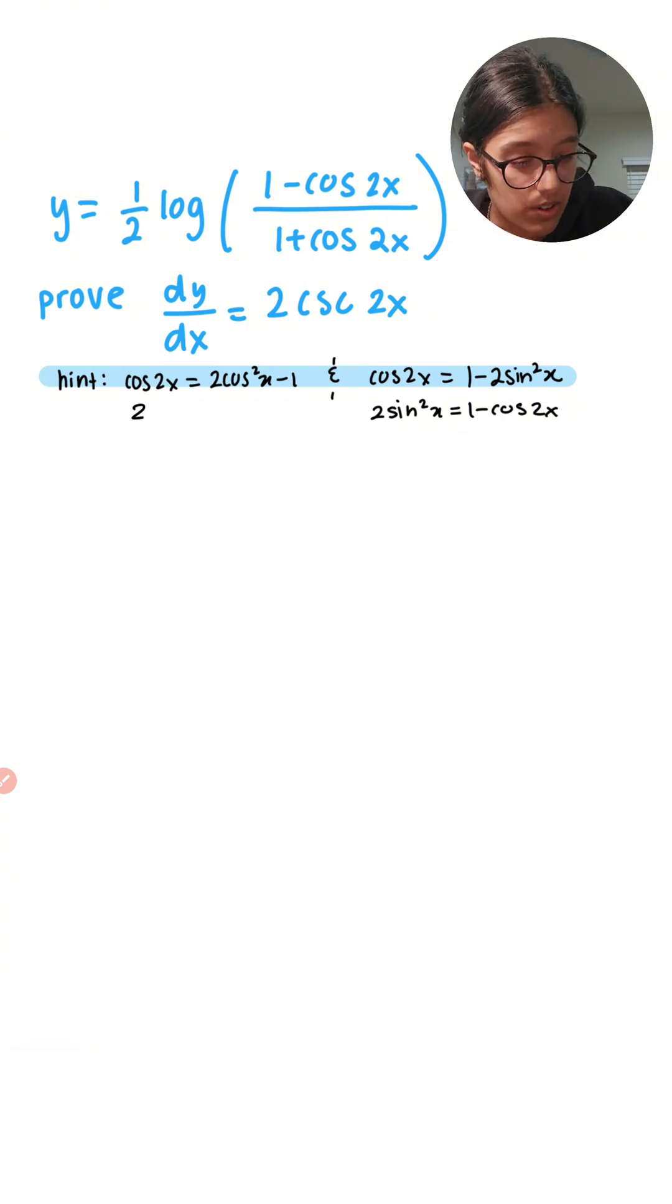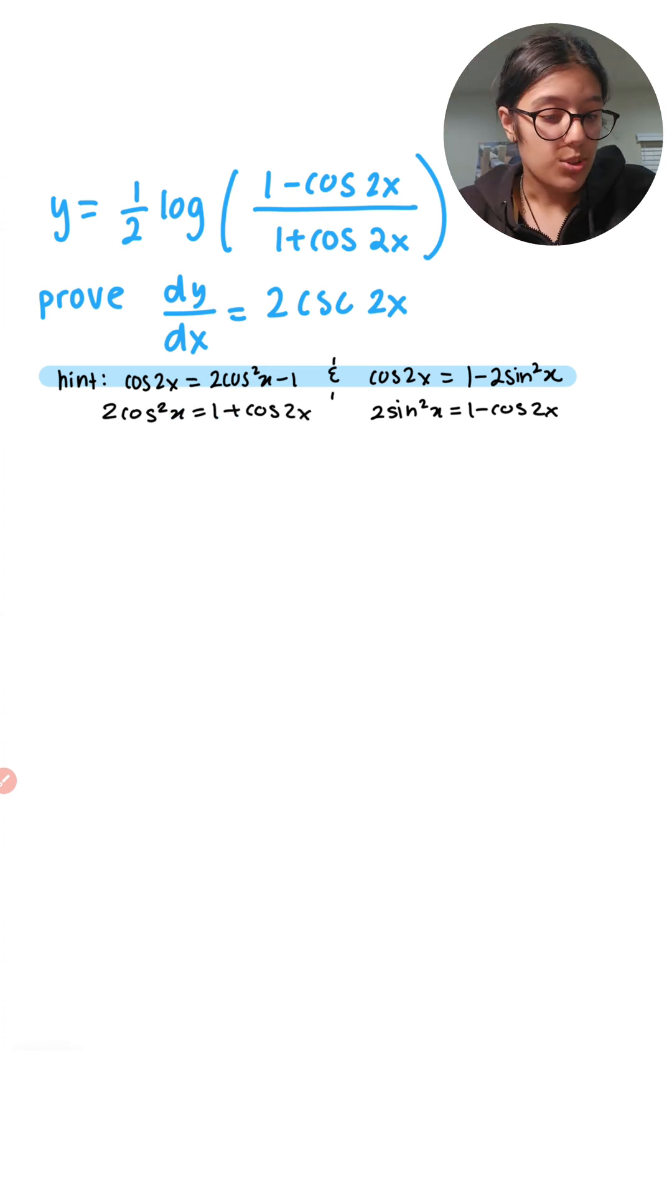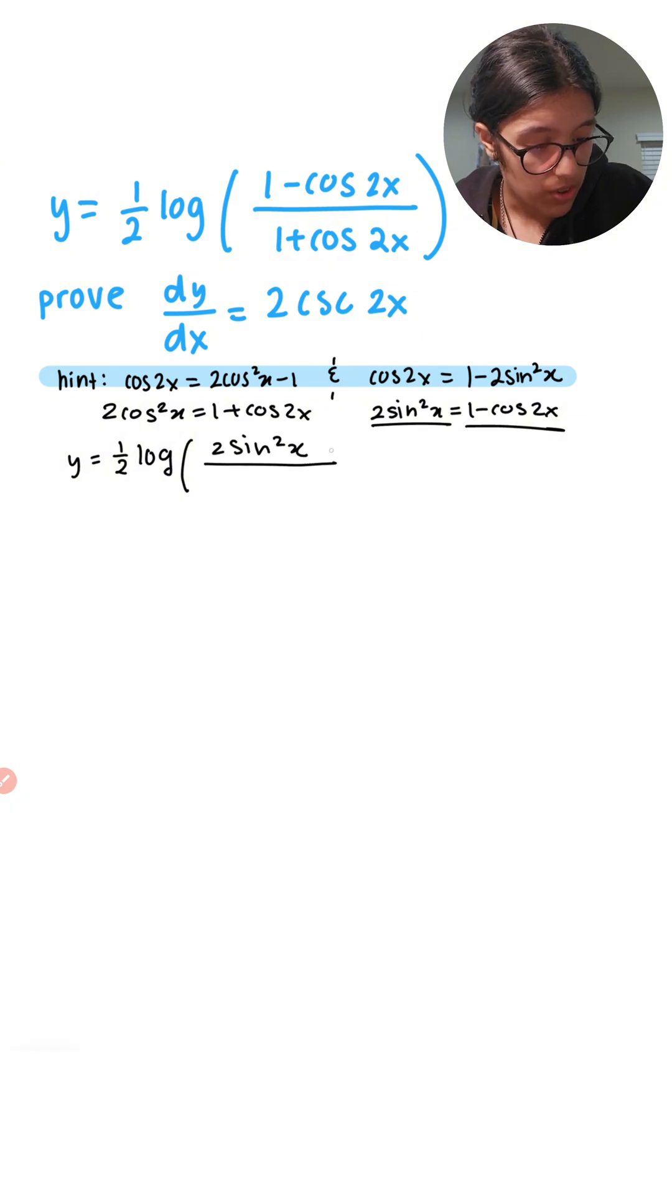So we have 1 plus cos 2x here and 1 plus cos 2x in the denominator. Let us substitute them. So we have y equals one half log of 1 minus cos 2x, which is 2 sin squared x, over 1 plus cos 2x, which is 2 cos squared x.